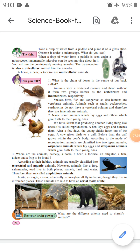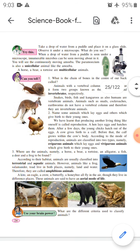Animals with a vertebral column and those without it form two groups known as vertebrates and invertebrates respectively. Snakes, birds, fish, and kangaroos as also humans are vertebrate animals. Animals such as snails, cockroaches, earthworms do not have a vertebral column and therefore they are invertebrate animals.